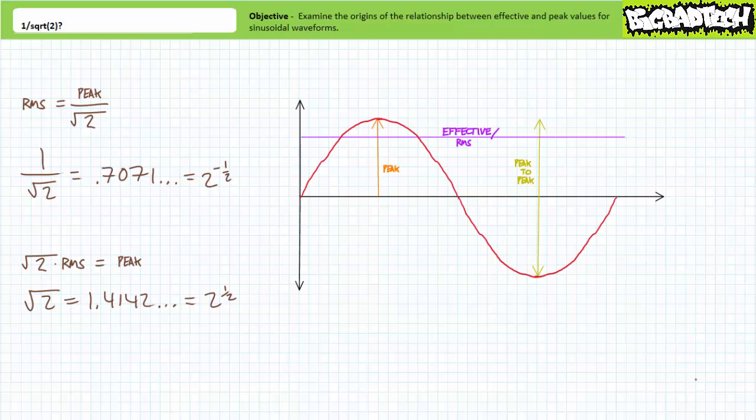You note that the effective or RMS value is slightly less than peak value, yet greater than half. This makes sense. Given a sine wave does regularly pass through zero, note it spends more time near its respective positive and negative peaks over the course of the full 360 degree cycle, so roughly 70.7% of peak is a fair estimate of a sine wave's effective value.